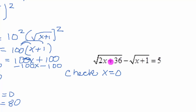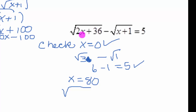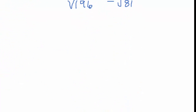For x equals 0: 2 times 0 is 0, so we get square root of 36, which is 6, minus square root of 0 plus 1, which is square root of 1 = 1. So 6 minus 1 equals 5 — x equals 0 is a good solution. For x equals 80: square root of 160 plus 36 = square root of 196, minus square root of 80 plus 1 = square root of 81. Square root of 196 is 14, square root of 81 is 9, and 14 minus 9 equals 5. Both solutions check, so we keep both.